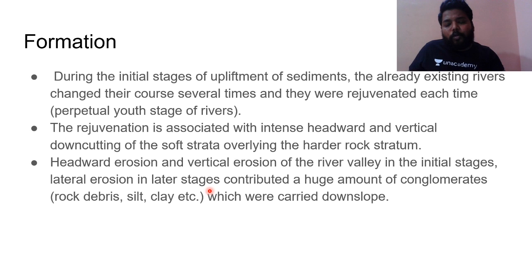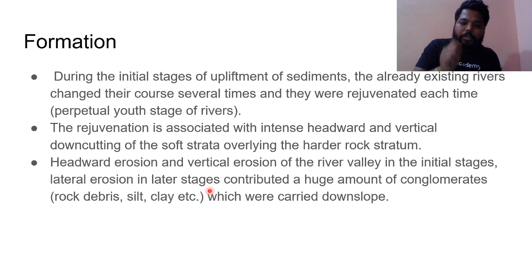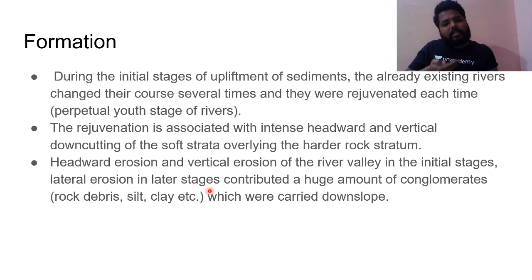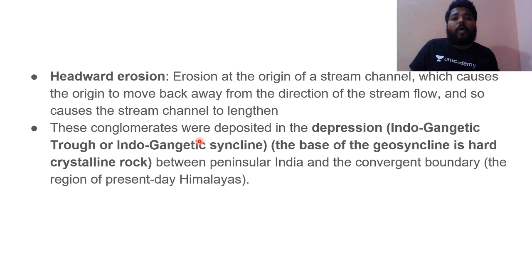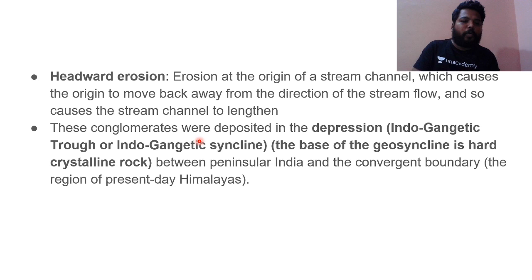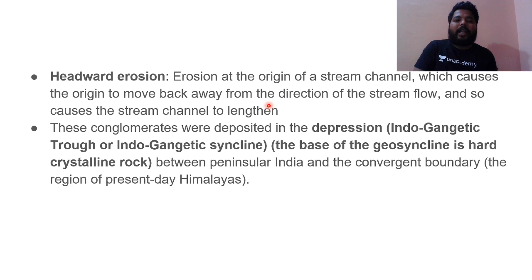The headward erosion and vertical erosion of the river valley in the initial stages, and lateral erosion in the later stages, contributed a huge amount of conglomerates — combinations of rock debris, small silt structures, and clay — which were carried down the slope and deposited at the synclinal structure, forming the Great Plains of India. The definition of headward erosion may be directly asked in UPSC Prelims: it is the erosion at the origin of a stream channel which causes the origin to move back away from the direction of stream flow, causing the stream channel to lengthen.